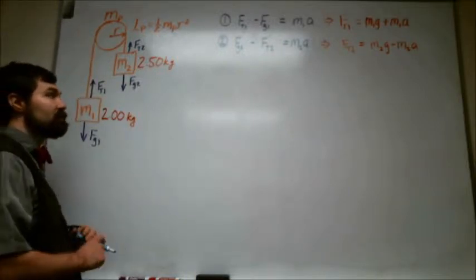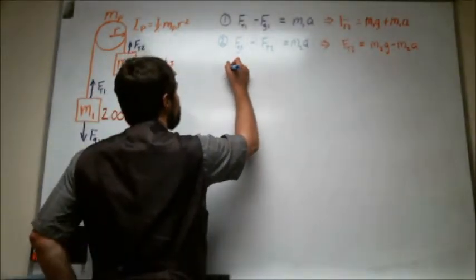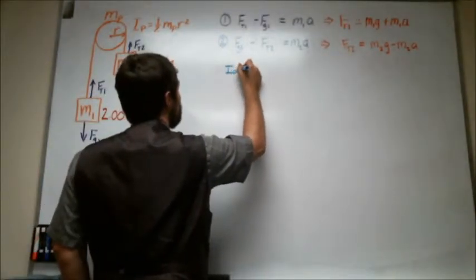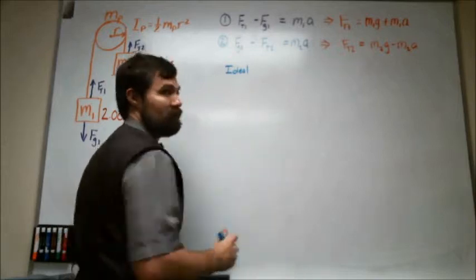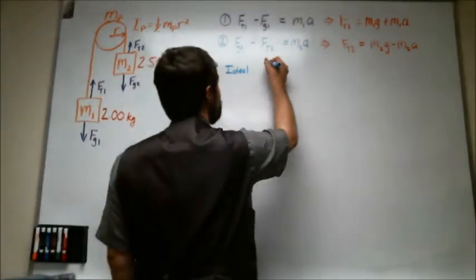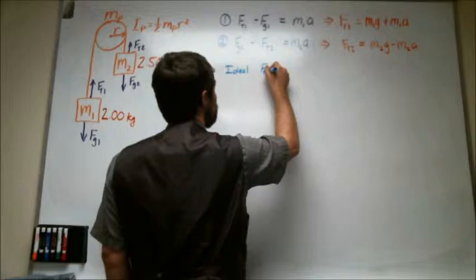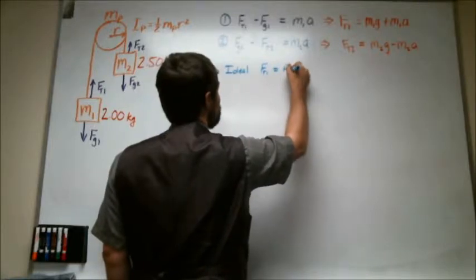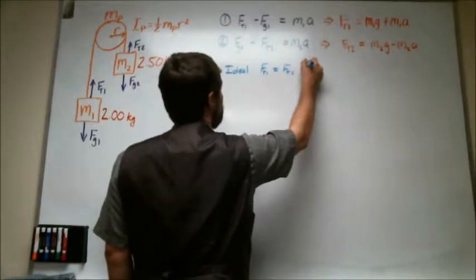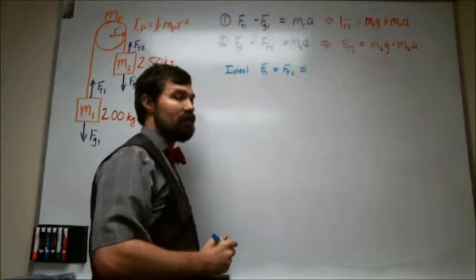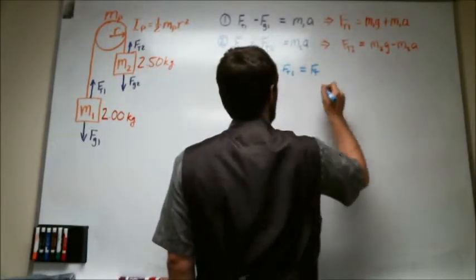And in the ideal case we set the two tensions equal to each other. So force of tension one is equal to force of tension two, which can then just be represented maybe by force of tension.